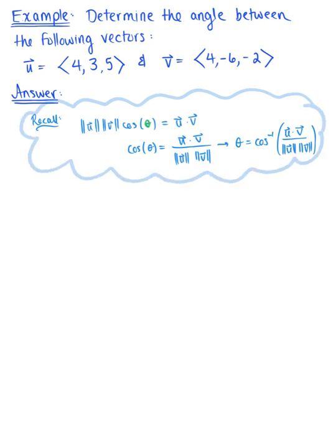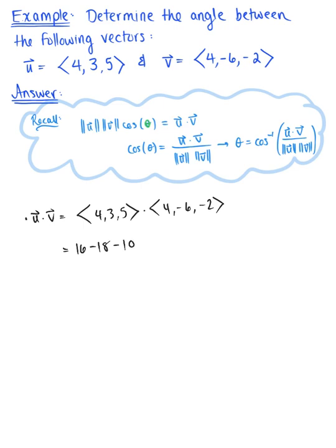Let's compute the argument of our arc cosine piece by piece, starting with the dot product. Vector u dot vector v: 4 times 4 gives us 16; 3 times negative 6 gives us negative 18; and 5 multiplied by negative 2 gives us negative 10. So we have 16 minus 18 minus 10, which equals negative 12.